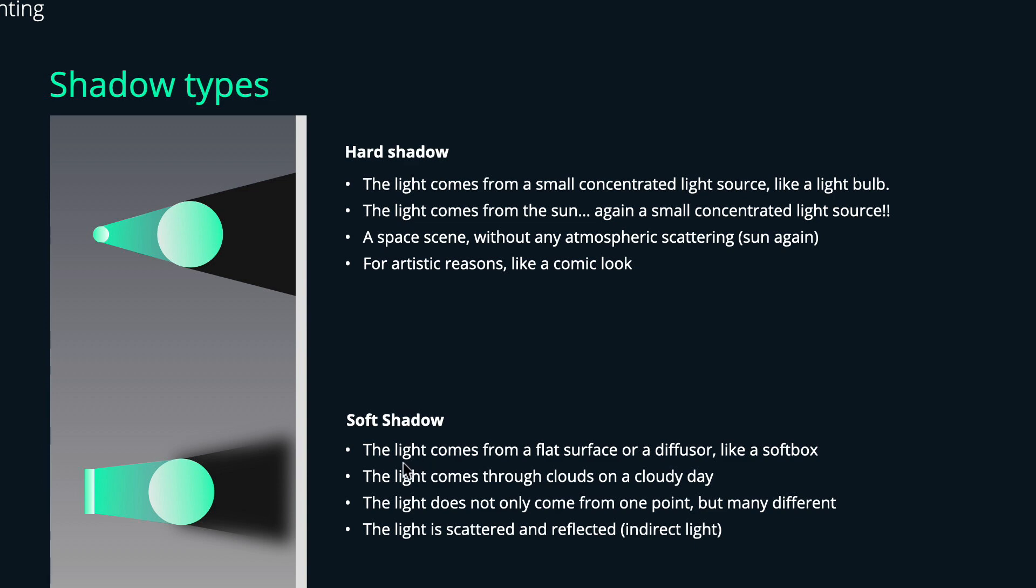Soft shadows on the other hand come from light sources which have like a flat surface or a diffuser in front of a light source like you know from a photo studio. Also clouds act something like a diffuser, so if light shines through clouds on a cloudy day the shadows will also be much more diffuse. We also get softer shadows if light comes from different light sources, so if you don't have just one light source but many. And also if you have light bouncing in a room then you have scattered light and thus the existing shadow will be more diffuse.